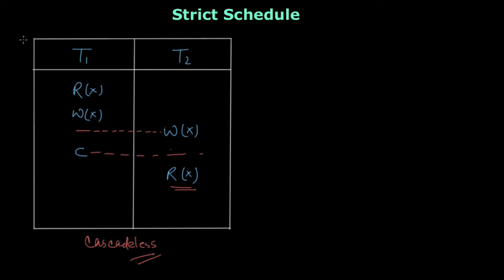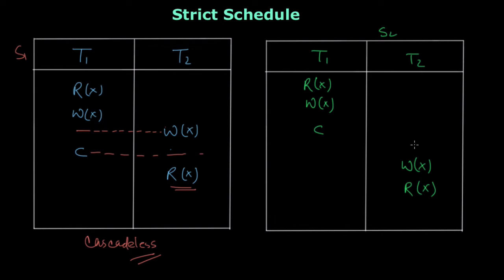So for transactions T1 and T2, that is for schedule S1, what will the strict schedule look like? Schedule S2 which I have written here is a strict schedule, because you can see that transaction T2 is performing write and read only after this commit. First transaction T1 commits, then T2 will perform read or write. So this is a strict schedule.